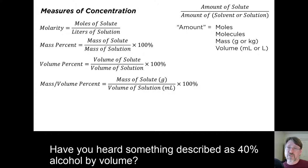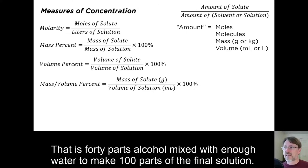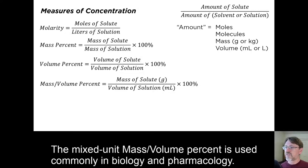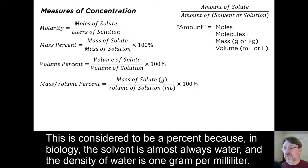Have you heard something described as 40% alcohol by volume? That is 40 parts alcohol mixed with enough water to make 100 parts of the final solution. The mixed unit mass over volume percent is used commonly in biology and pharmacology. This is considered to be a percent because in biology, the solvent is almost always water, and the density of water is one gram per milliliter.